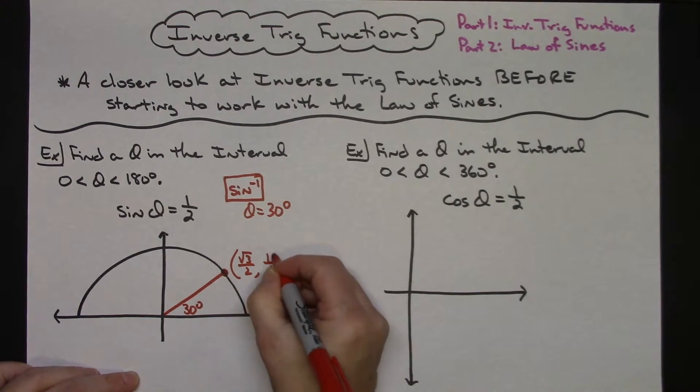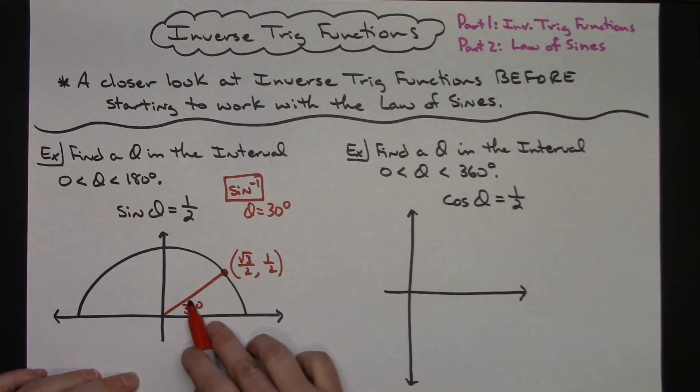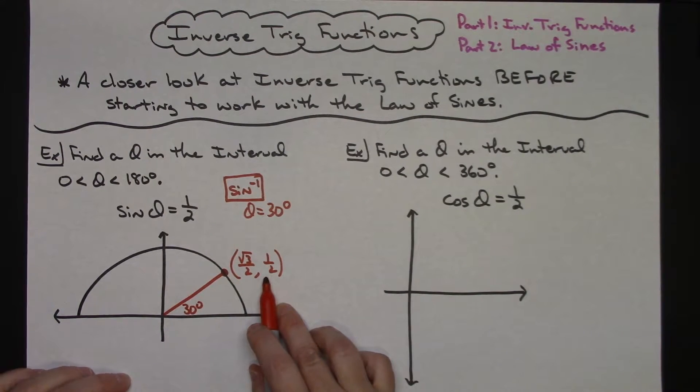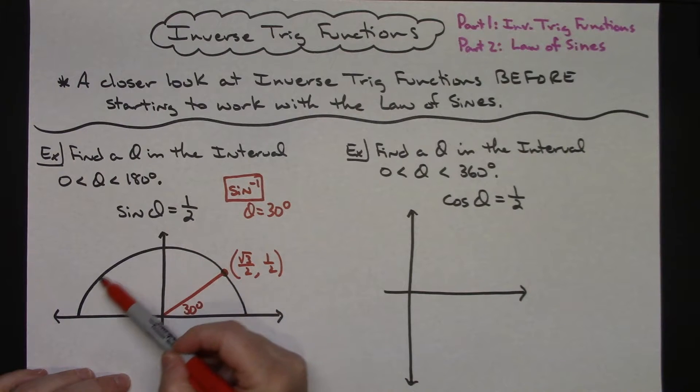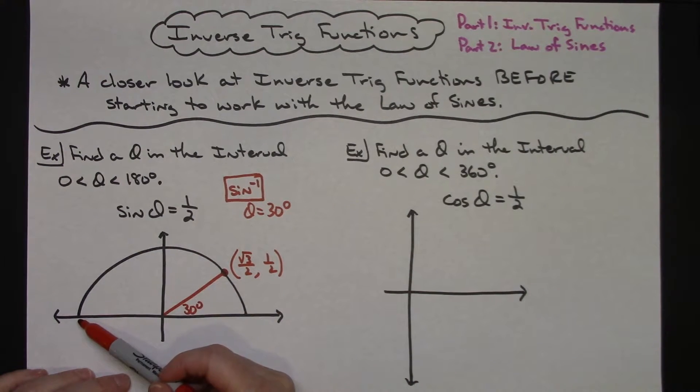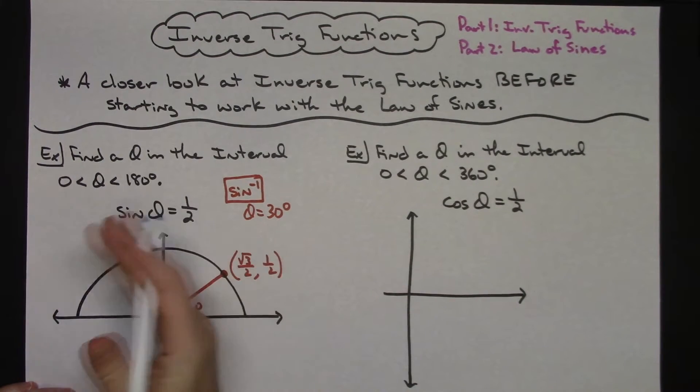On a unit circle, the coordinates that go along with that point are square root of 3 over 2 and one half. As you recall, on the unit circle the first value in the ordered pair is cosine, the second is sine. So sine of 30 is one half. But that's the only value your calculator will return. The question is, is there any place else along this semicircle between 0 and 180 degrees where sine is one half? The answer is yes, because the unit circle is symmetrical.